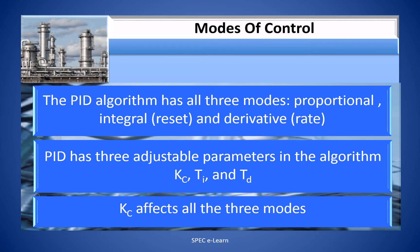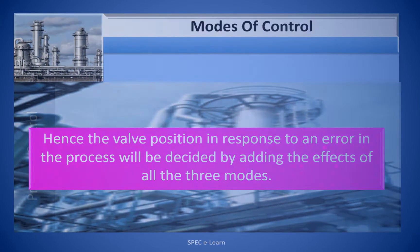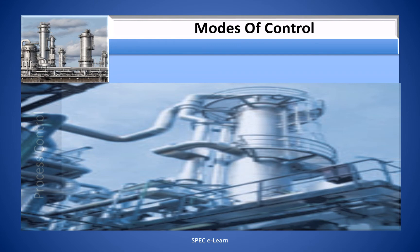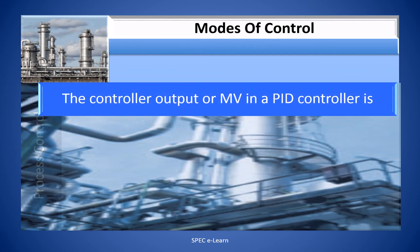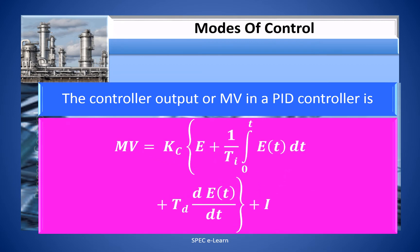Kc affects all three modes. Hence, the valve position in response to an error in the process will be decided by adding the effects of all three modes. The controller output or MV in a PID controller is expressed as: MV = Kc × [e + (1/Ti) × integral from 0 to T of e(t) dt + Td × (dE/dt)] + i.